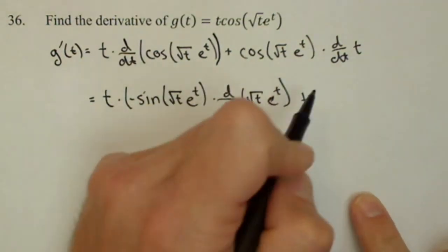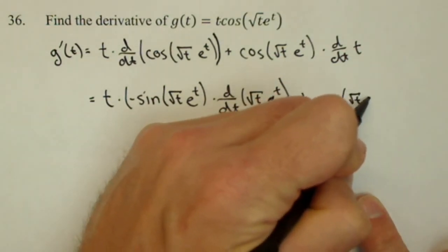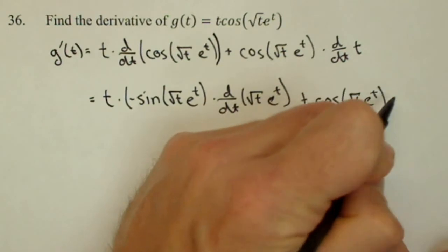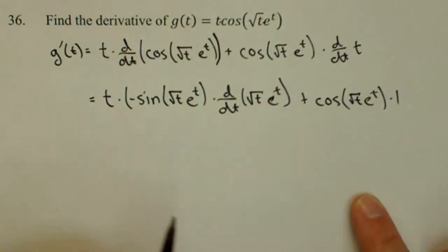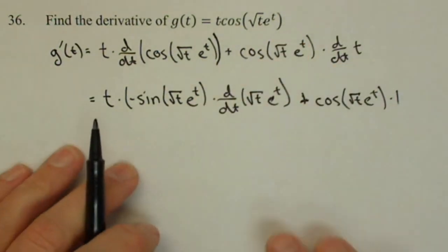Plus, now remember this was already done, cosine of square root of t e to the t times the derivative of t, which is just one. We won't write that in the next step. I'll put it there just so you can see that that became that.